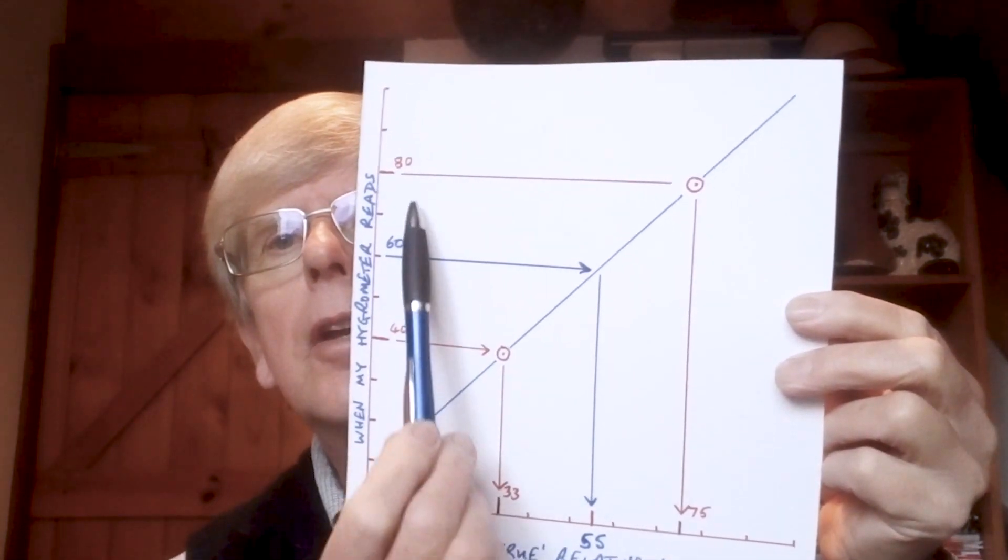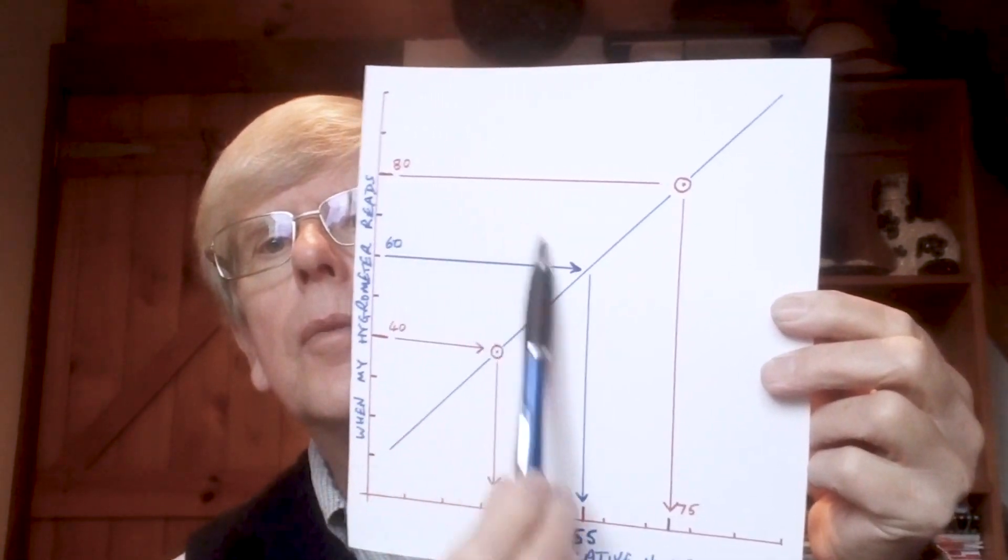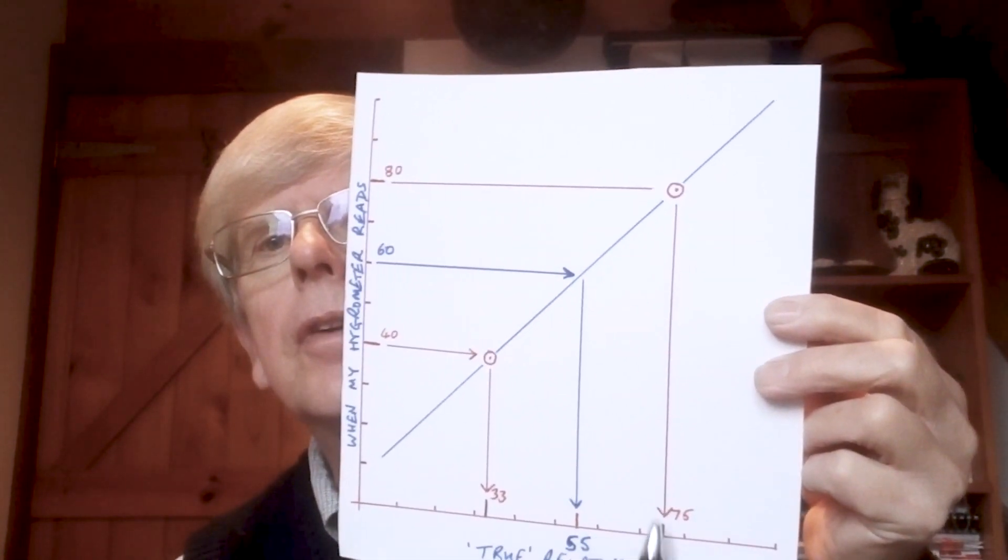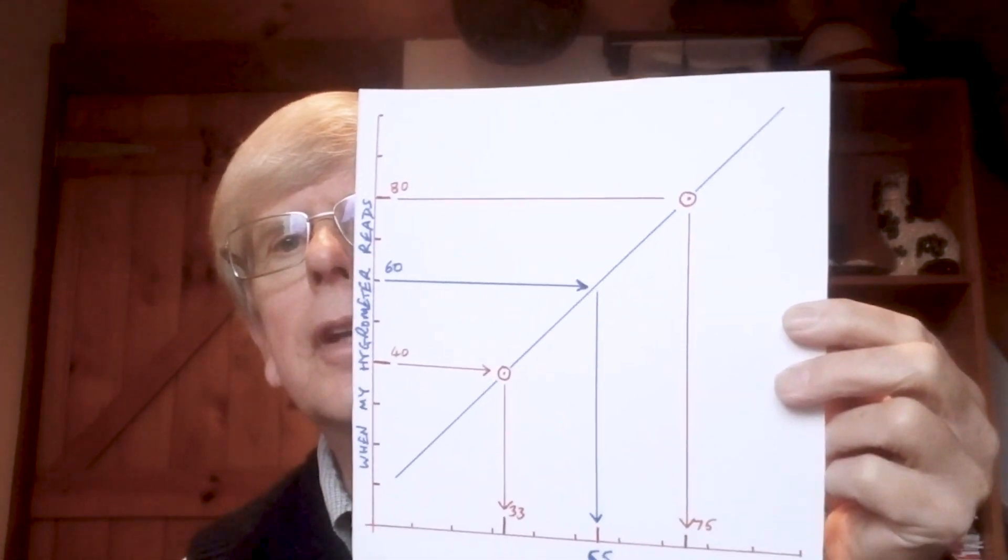And then you do the same again using the salt, and you read 80, and it should really read 75. So you've got another point, and then you draw a conventional calibration line as shown there in the blue.